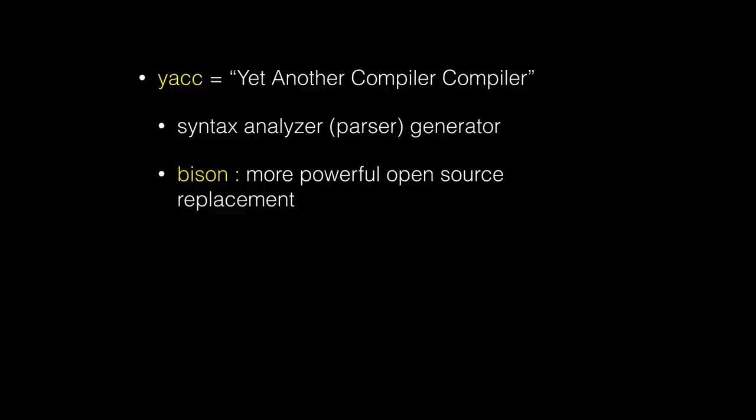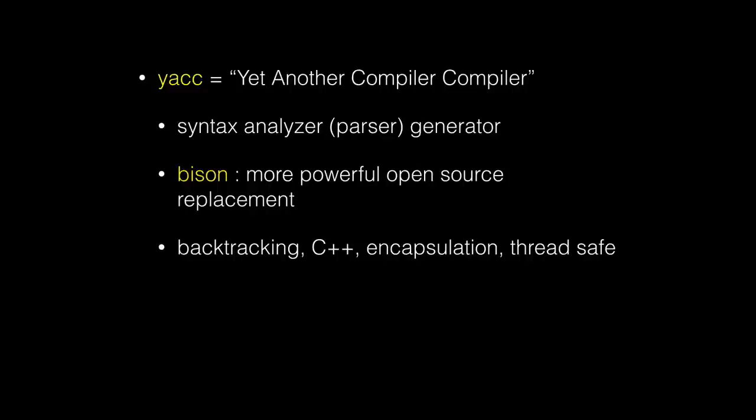Bison is the open source replacement for YAC, and it's far more powerful than the original. It allows you to build what are called backtracking parsers, which are beyond the scope of what we'll do in this class. You can also build encapsulated C++ classes that hold your parsers that are thread-safe. The parsers we'll generate will be not encapsulated, not thread-safe, and certainly not do backtracking. So Bison does far more than what we'll use in this class.